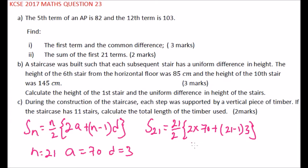70 times 2 is 140, plus 140. 21 minus 1 is 20 times 3, so it is plus 60, and this is 21 over 2. When you add 140 plus 60, you get 200. 21 over 2 times 200, divide by 2 you get 100. 100 multiplied by 21, you get 2100. That is the sum of the first 21 terms in that question.